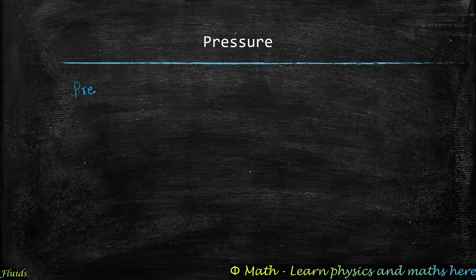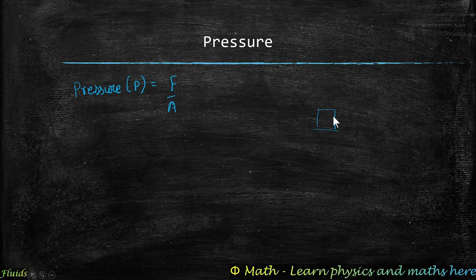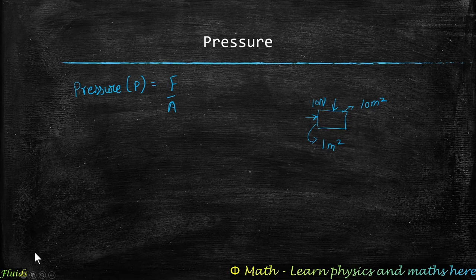The first term defined in fluids is pressure, denoted by P. Pressure is force per unit area, or F over A, where F is the applied force and A is the area on which the force is applied. For example, if we take a rectangular block and apply a force on a side with area 1 meter square and another side with area 10 meter square, with both forces equal to 10 Newtons.